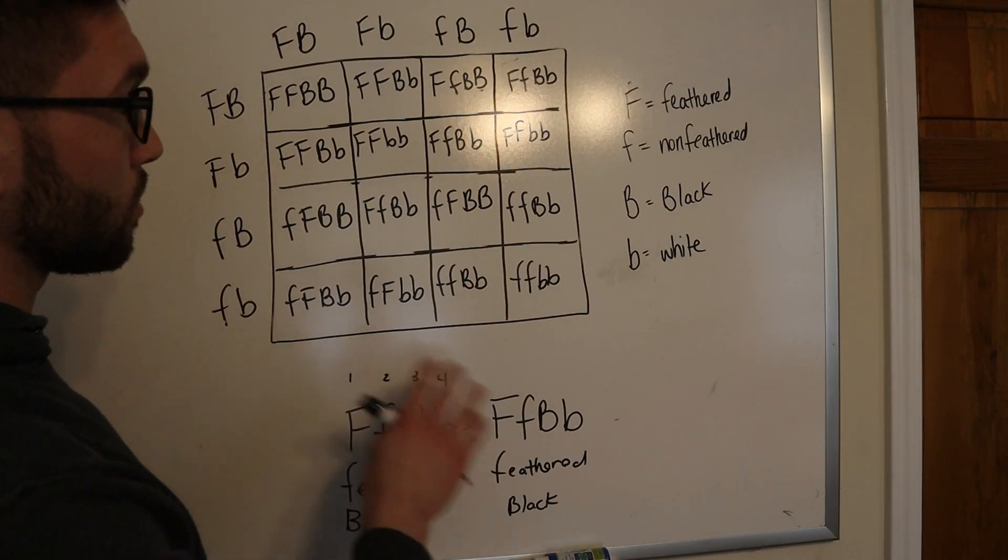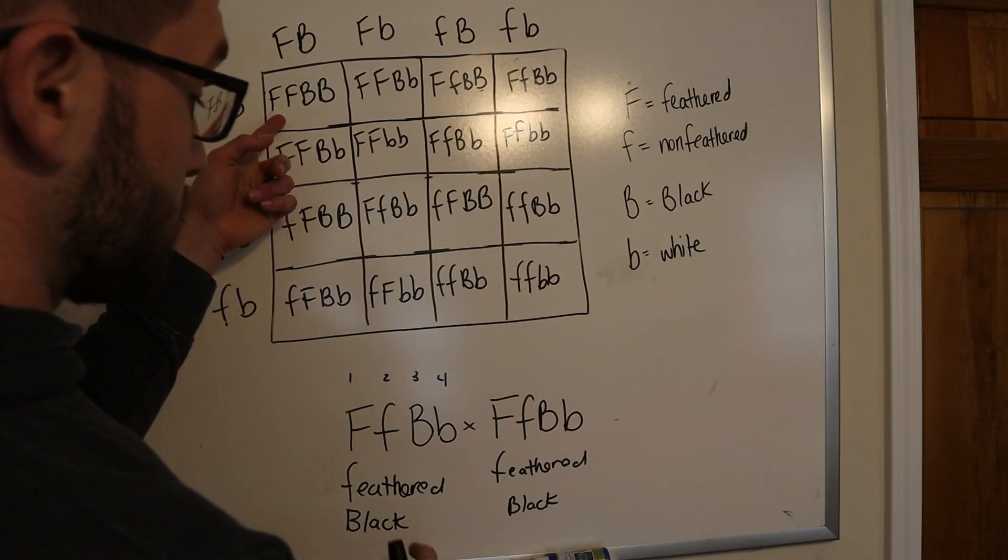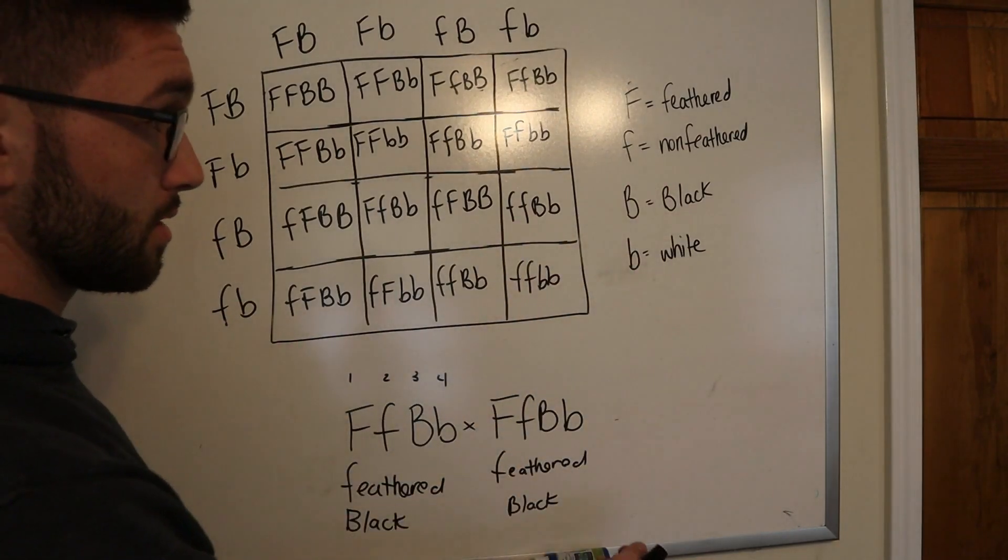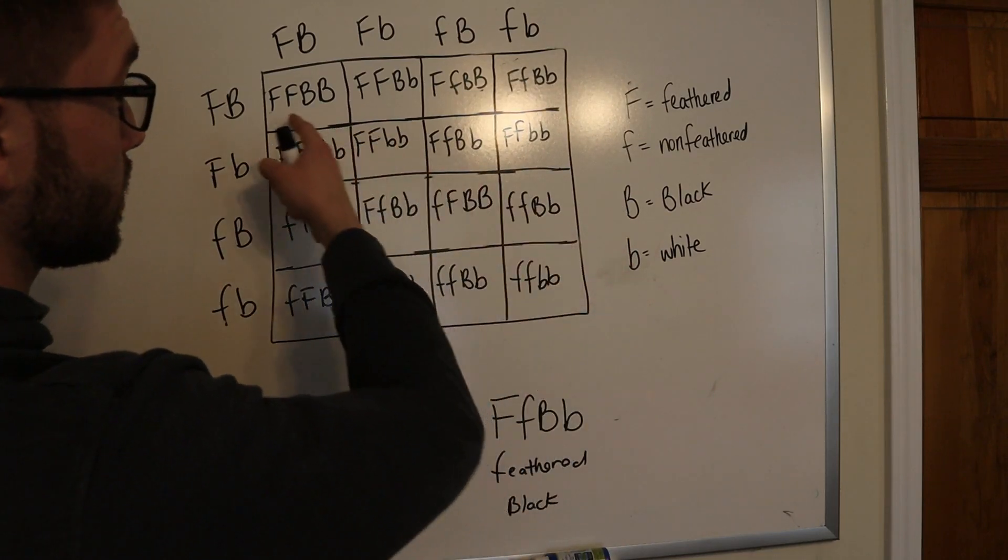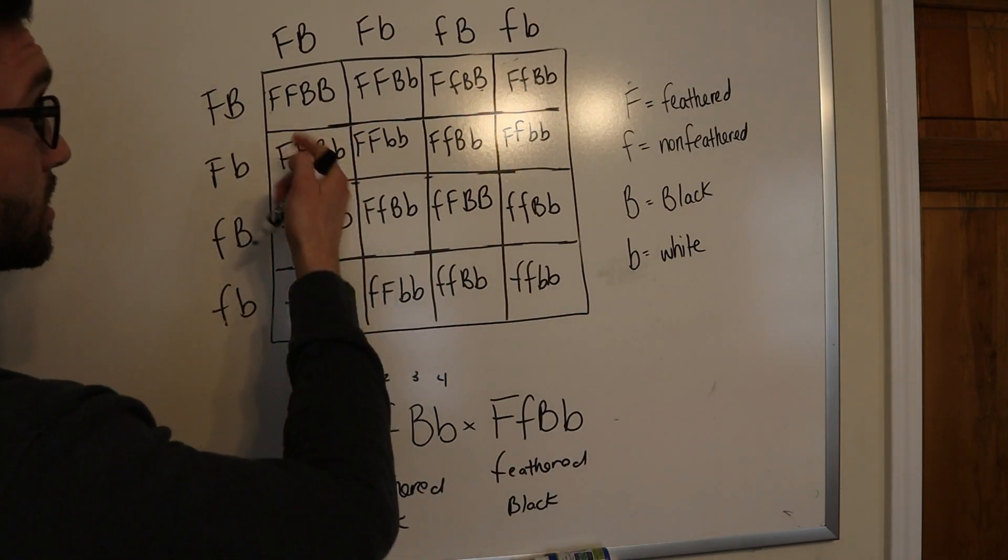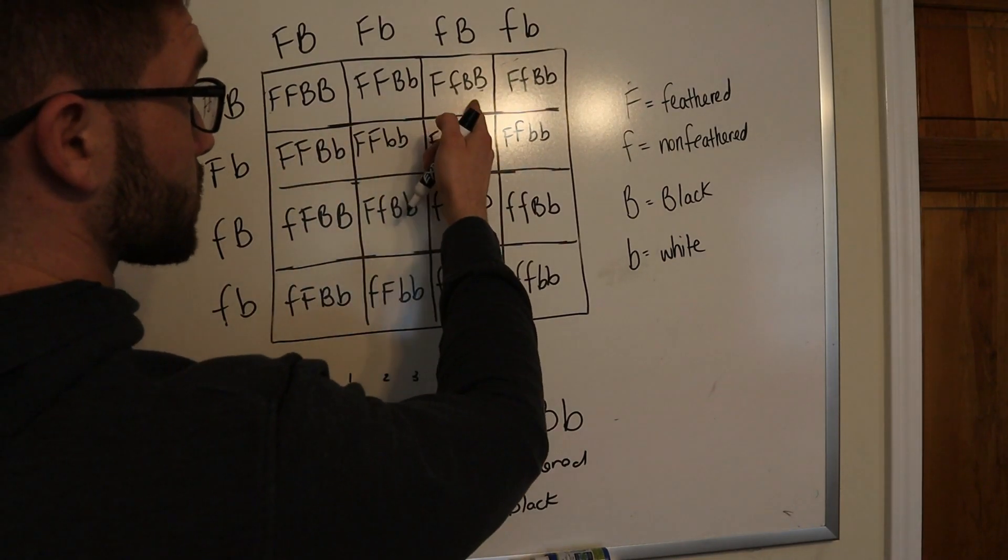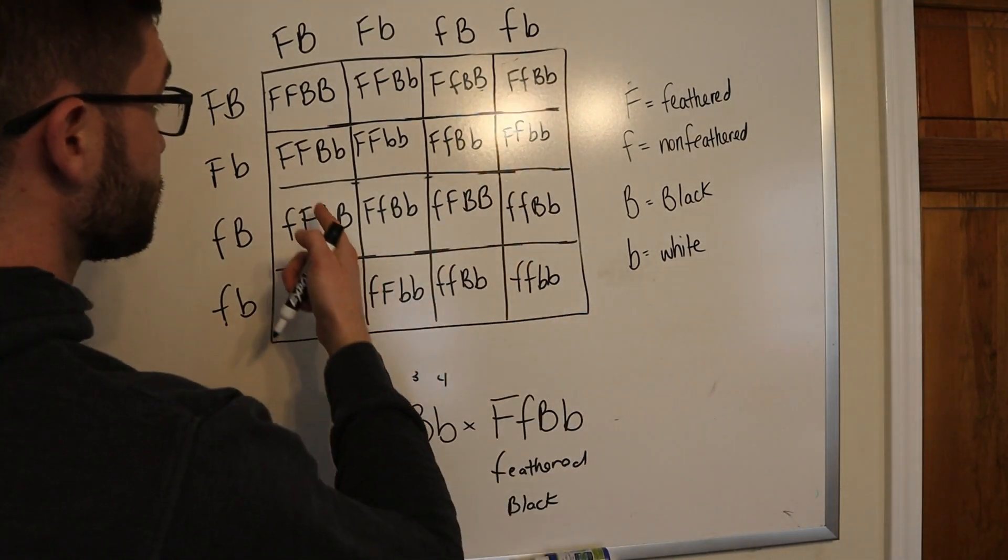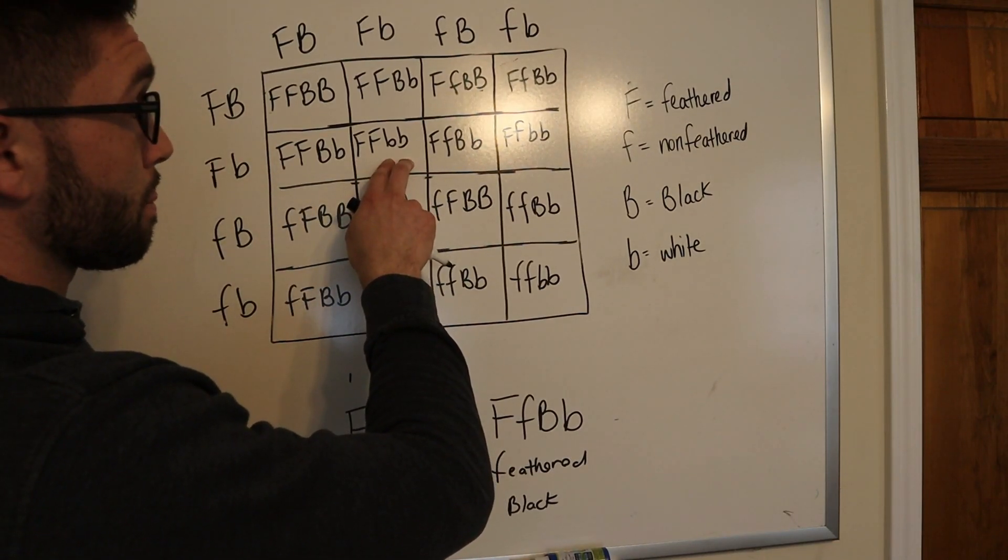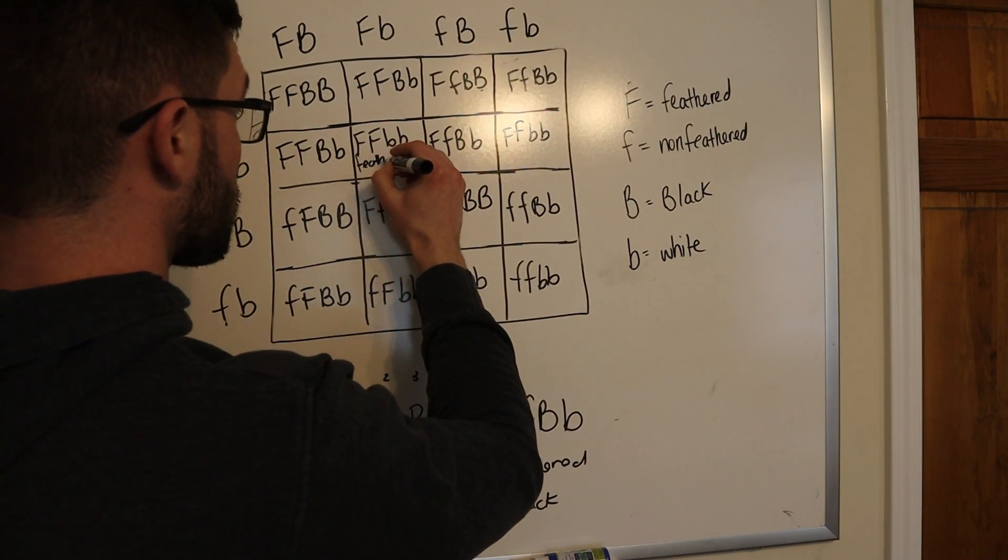Okay, so, this may look like a lot, but it's really easy once you just break each box down. So, in order for it to be feathered, it only has to carry one dominant allele because that's dominant over the non-feathered. In order for it to have black shanks or black feet, it has to have one large B in the mix for you to see black shanks on the chick. So this one has feathered and black shanks. This one has also feathered black shanks. Feathered black shanks, feathered black shanks, and the same thing for this. But here, it's feathered, but since it's homozygous for the white shanks, it's actually feathered with white shanks.